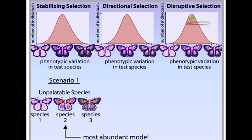Birds often encounter butterflies with these markings and learn to avoid eating them. This gives individuals of our test species with intermediate markings an advantage over the other edible individuals. Over the generations, the mimics with the intermediate phenotype will survive and reproduce more.